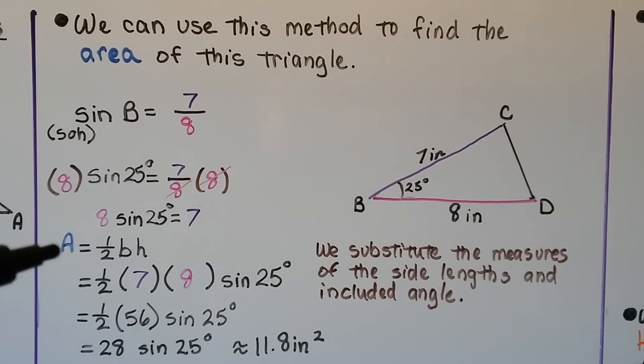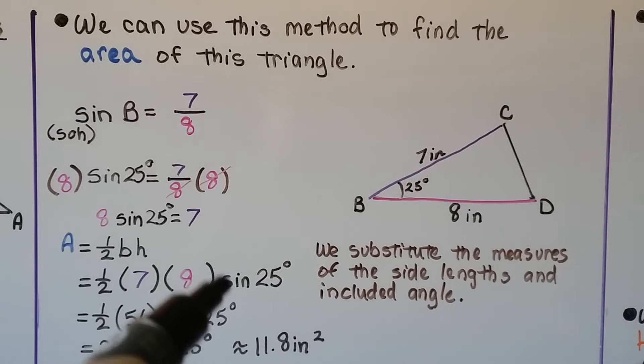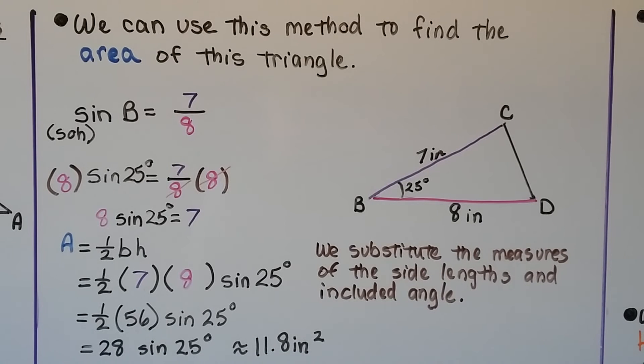We're going to use area equals 1/2 base times height and put this in. So we've got 1/2 times 7 times 8 sine of 25 degrees. We substitute the measures of the side lengths and the included angle. That means we have 1/2 times 56 times the sine of 25 degrees, which is 28 times the sine of 25 degrees. And we put that into our scientific calculator, and we get that it's approximately 11.8 inches squared.